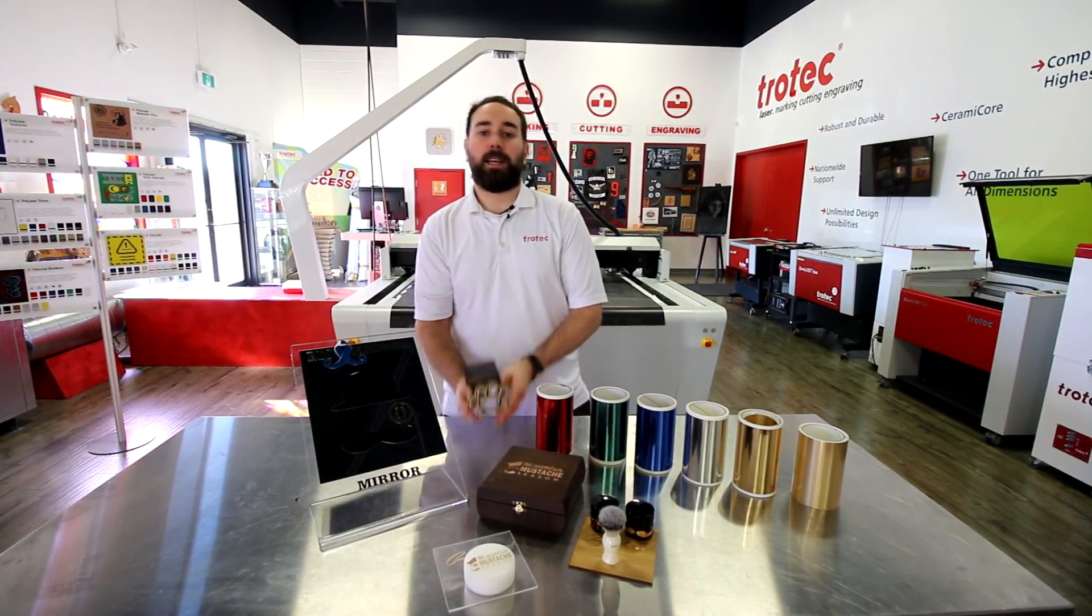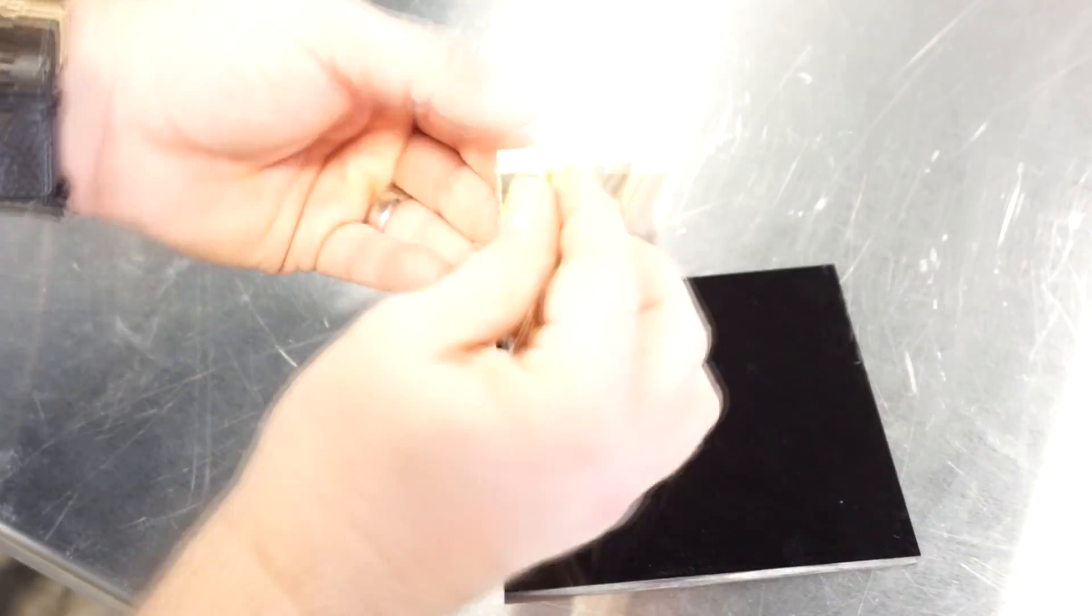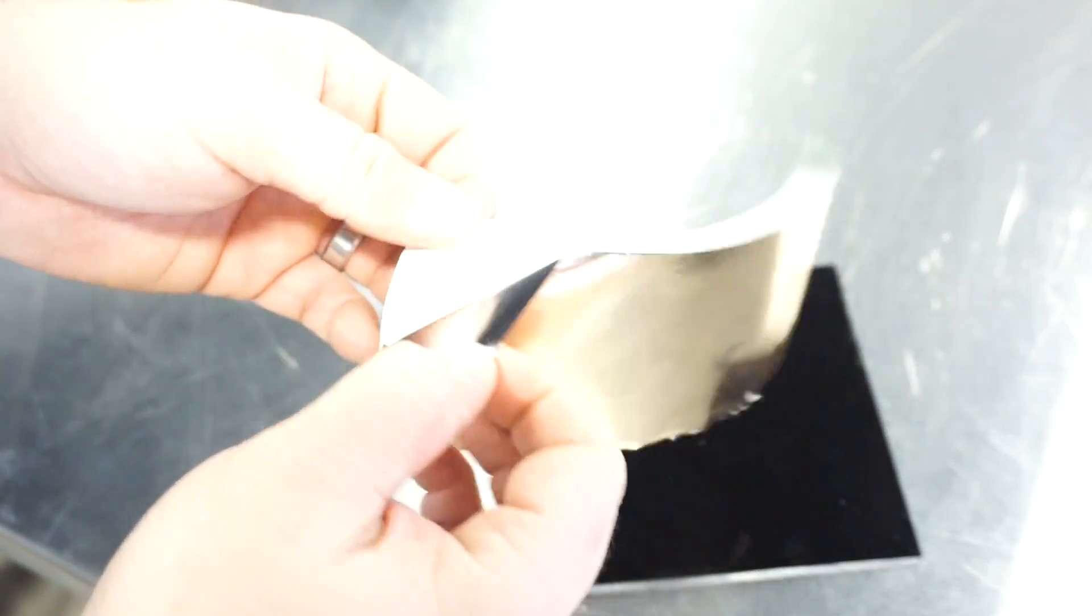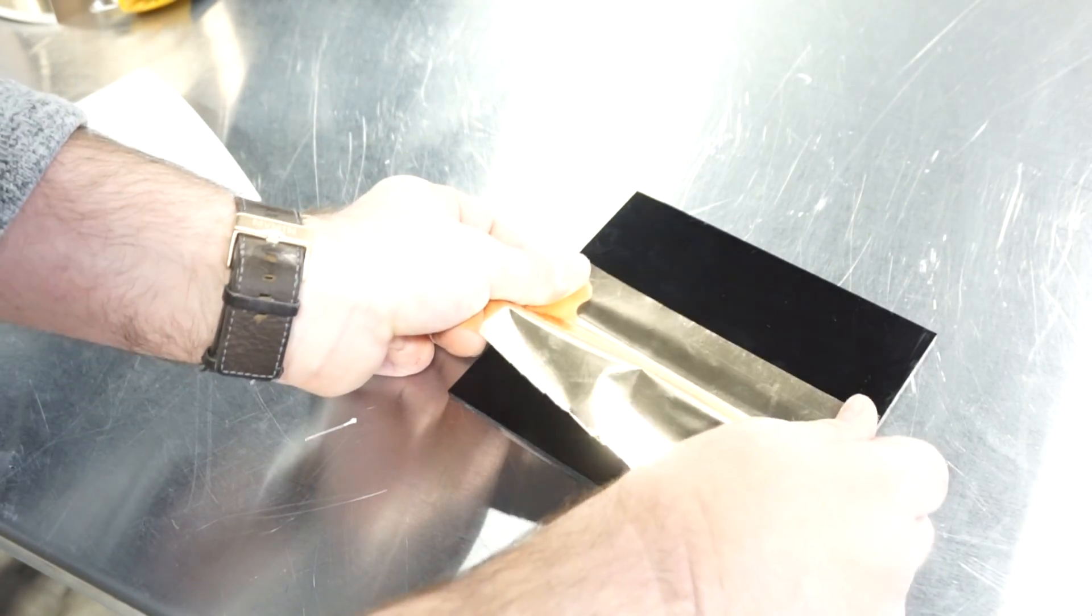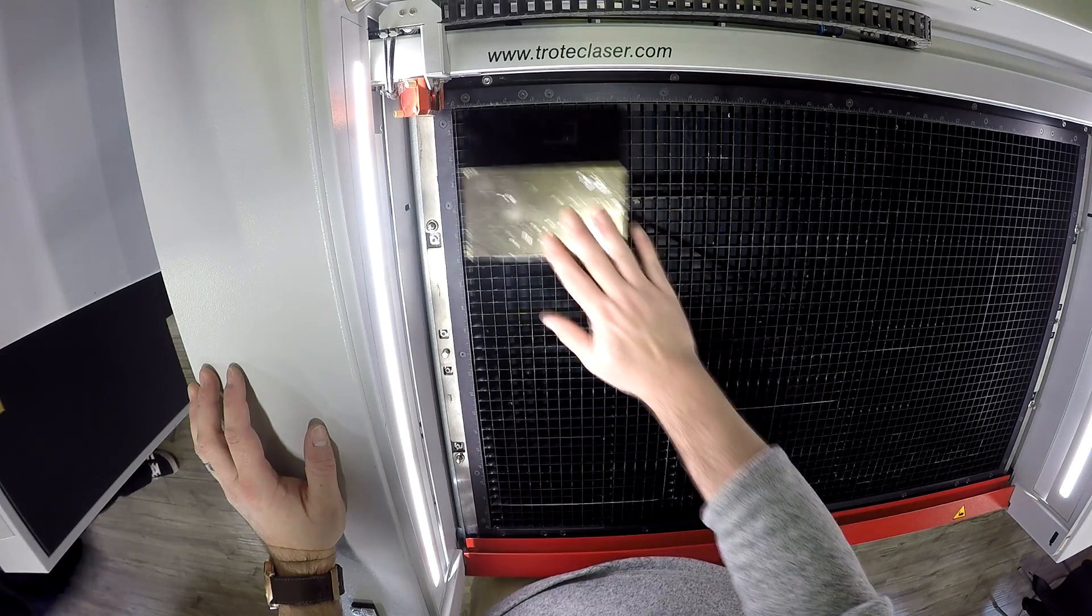So let's start with our mustache comb. We started by putting our Gold Foil onto our Trilglas Color Gloss Black Acrylic. We put it into our Speedy 360 and continued to cut and engrave it.